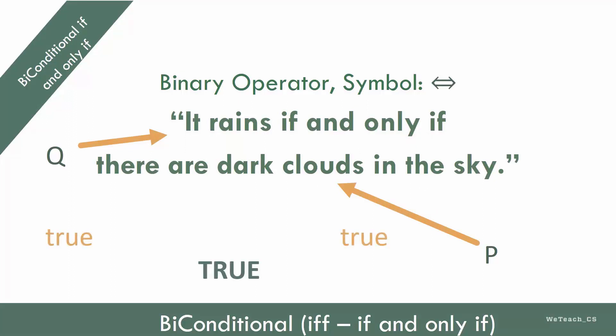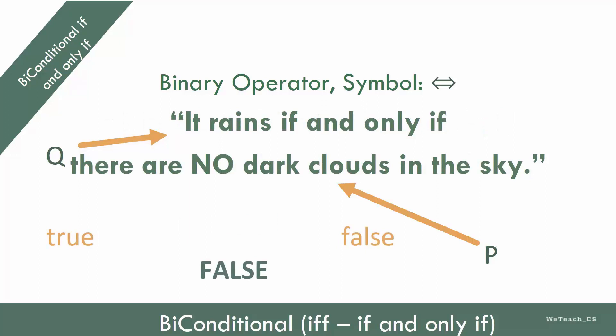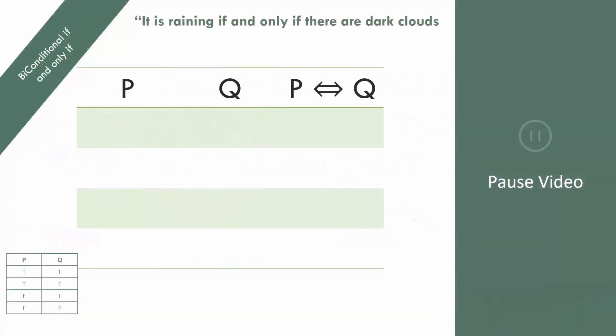The inverse situation is also true. No dark clouds, no rain. Both opposite situations, however, result in a false statement. As you did with the implication table, think about the example we just examined, and complete the entire table shown through a biconditional, using the combination shown at the bottom left.